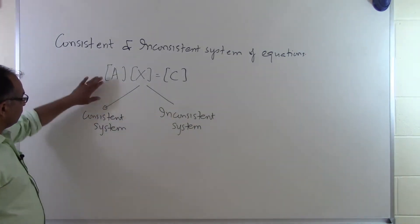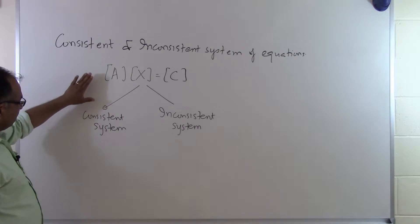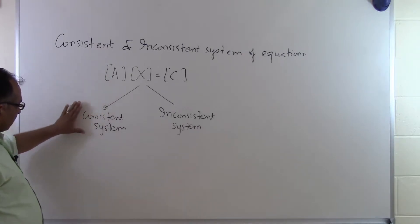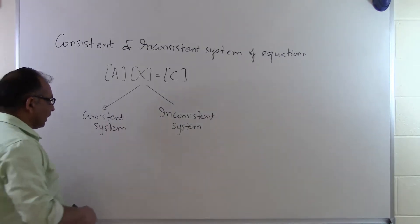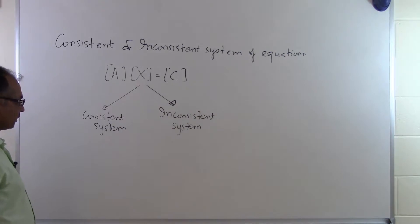So if somebody gives you N equations and unknowns, you're putting them in matrix form, then this particular system of equations can be considered to be a consistent system or it would be an inconsistent system. So how do we know whether a particular system of equations is consistent or inconsistent?